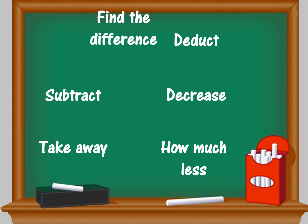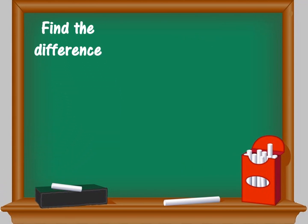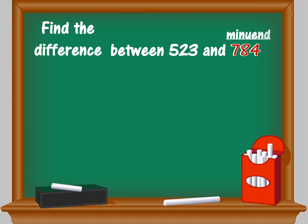First, let us begin with 'find the difference.' Find the difference between 523 and 784. 'Find the difference' means subtraction, and in subtraction we arrange the greater number minus the smaller number. In this question, the greater number is 784, which means 784 is the minuend.